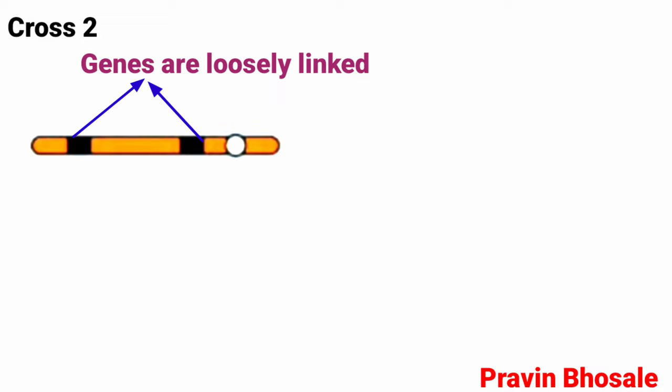Let's see Cross 2. Here genes are loosely linked — there is more distance between them.